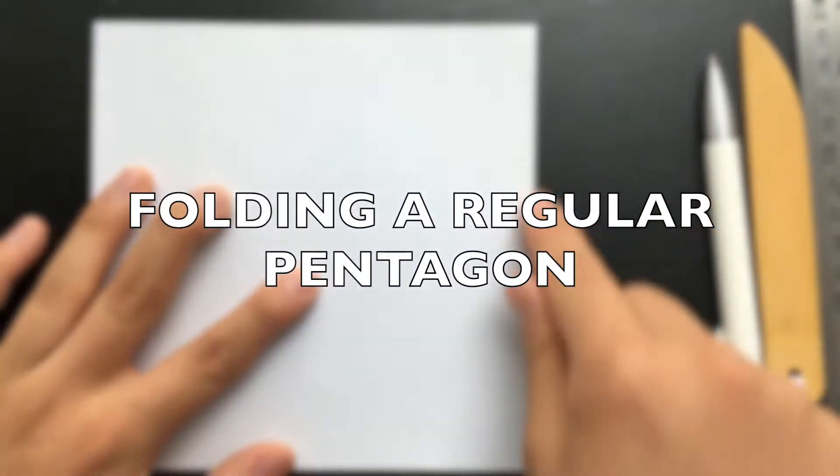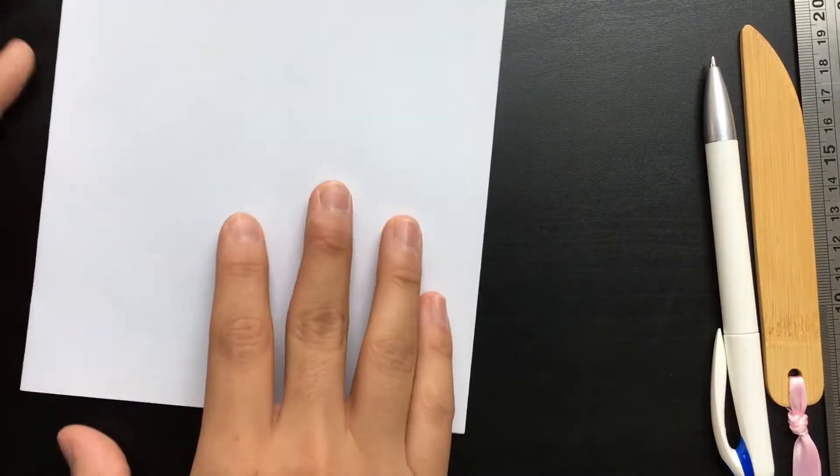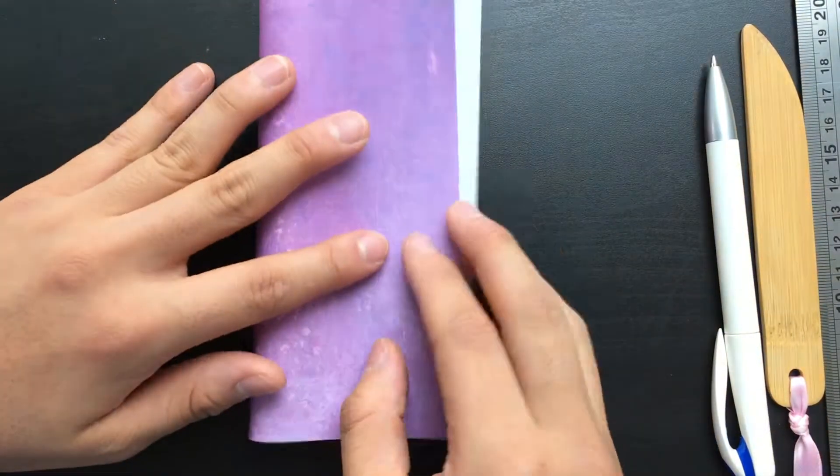In this video I'm going to be showing you how to make a regular pentagon from a square, and we're going to assume each side is two units in length, each side of the square.